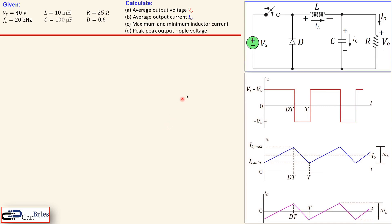Before we move on with the calculations, let's first look at the waveforms. This is the inductor voltage. We see the first part where we have the switch closed — when the switch is closed, Vs equals VL plus the voltage at the output, so the inductor voltage is Vs minus Vo. When the switch is opened, the diode will be conducting, and the voltage across the inductor will be minus Vo. Then the sequence will repeat itself in similar fashion.